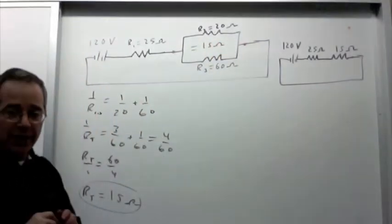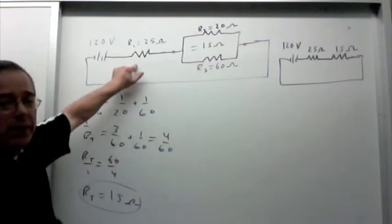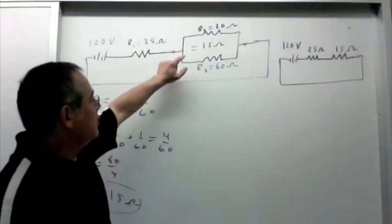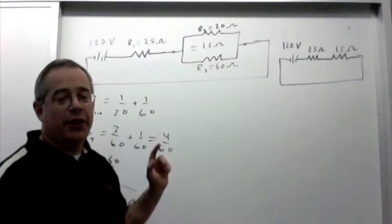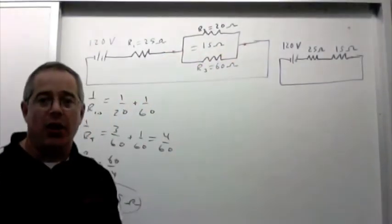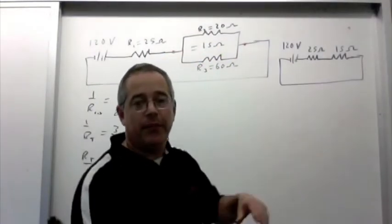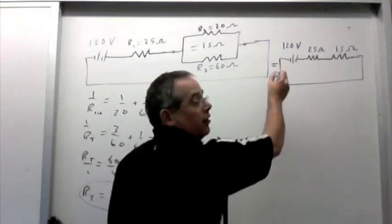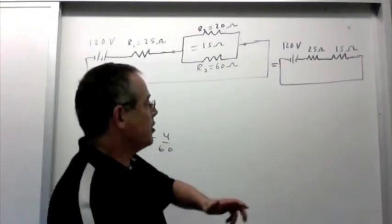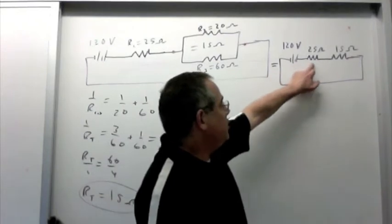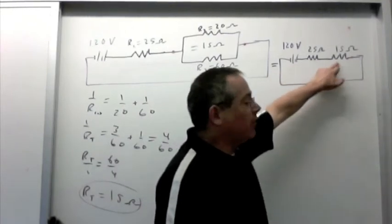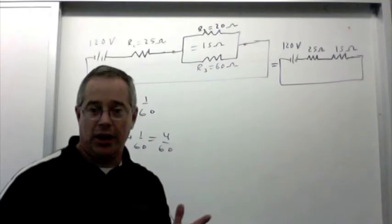Now as far as the battery is concerned, it's connected to a 25 ohm resistor in series with 15 ohms. The resistance between these two red dots is 15 ohms. And that's what I did over here. These circuits are equivalent. Here's a 120 volt battery connected to 25 ohms in series with 15 ohms. These are the same two circuits.